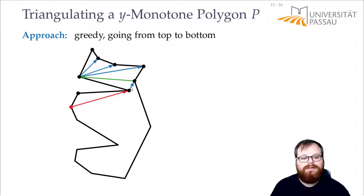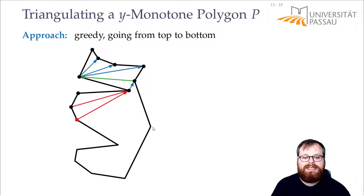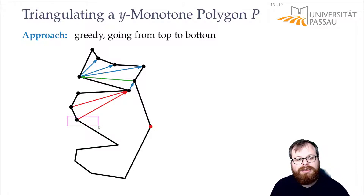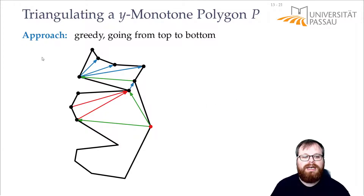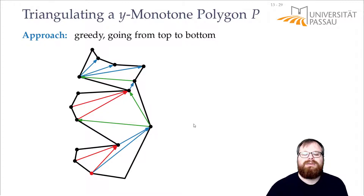This again cuts off something that's triangulated. Our new polygon follows these new diagonals and the boundary of the previous one. The next vertex we can connect here. The next vertex on the right we can connect to this one and to this one. Again, everything up here is triangulated. That way we handle all the vertices, walk downwards, and in the end we have triangulated the whole polygon.